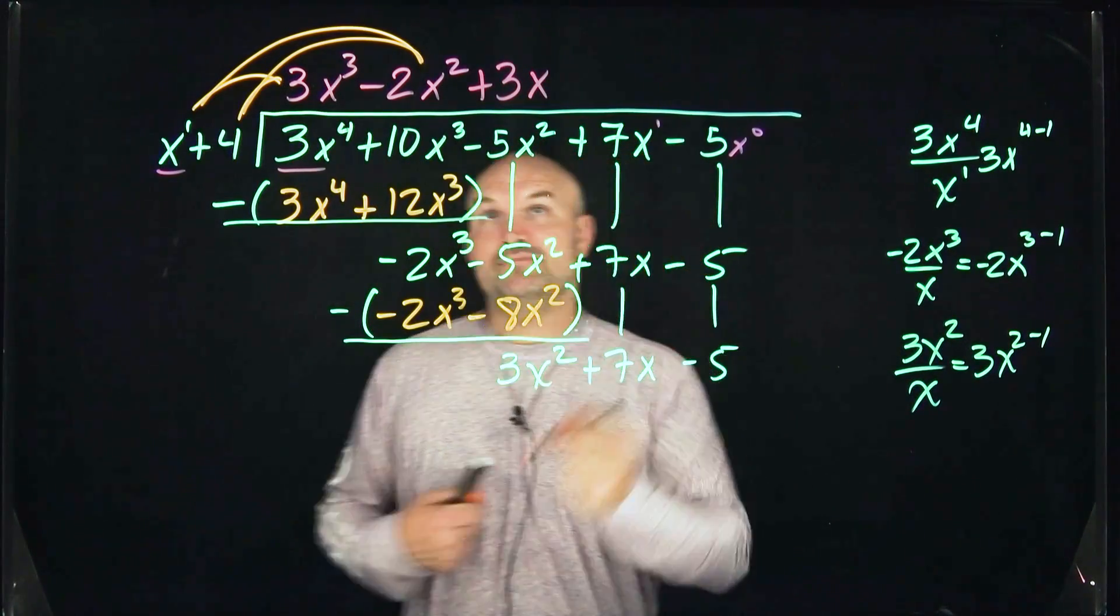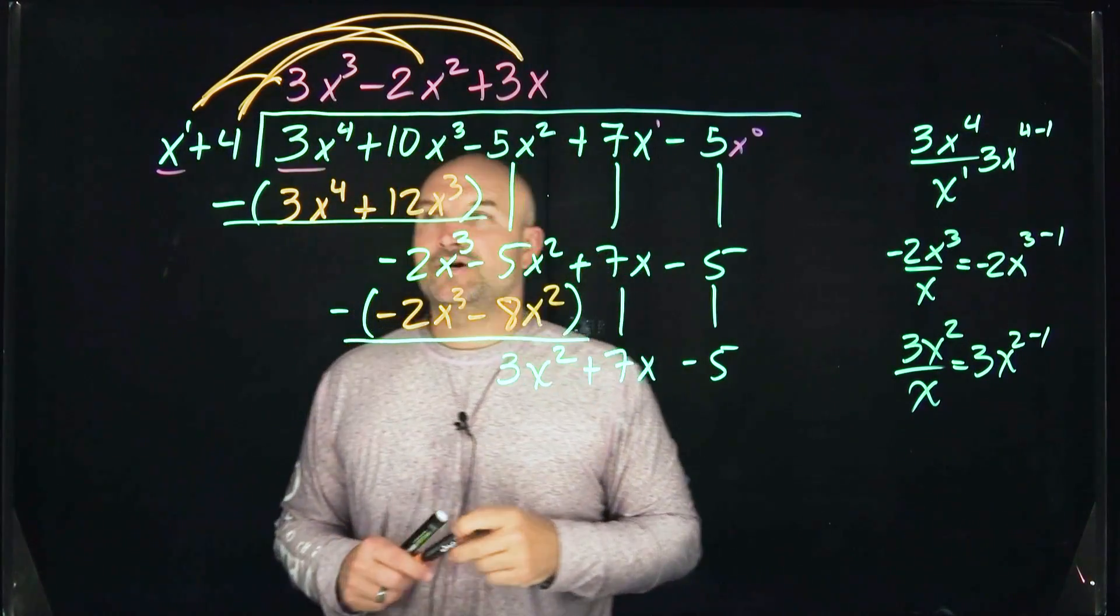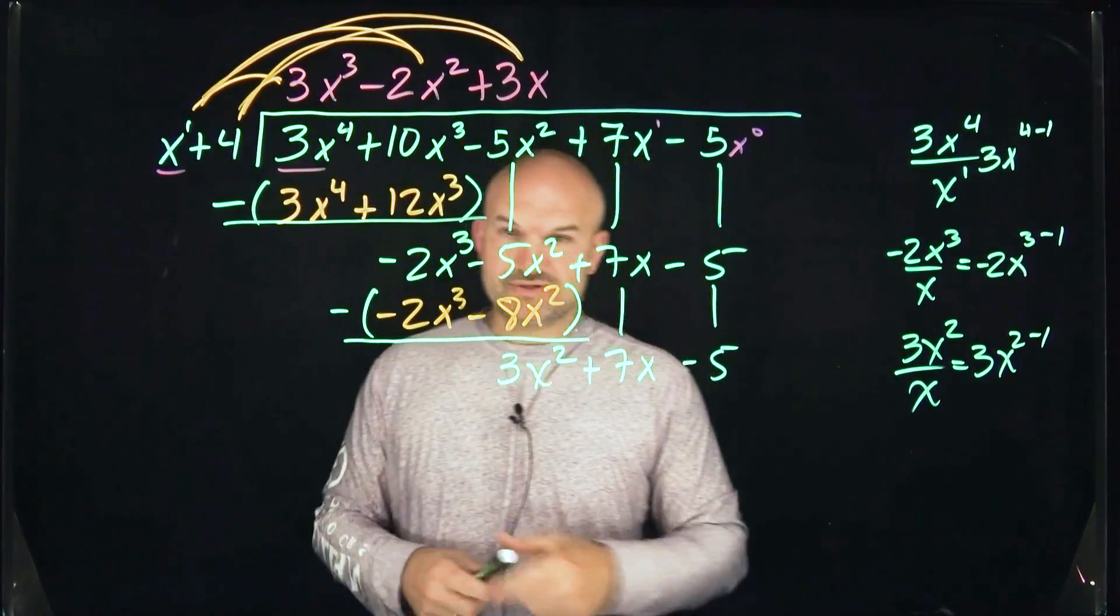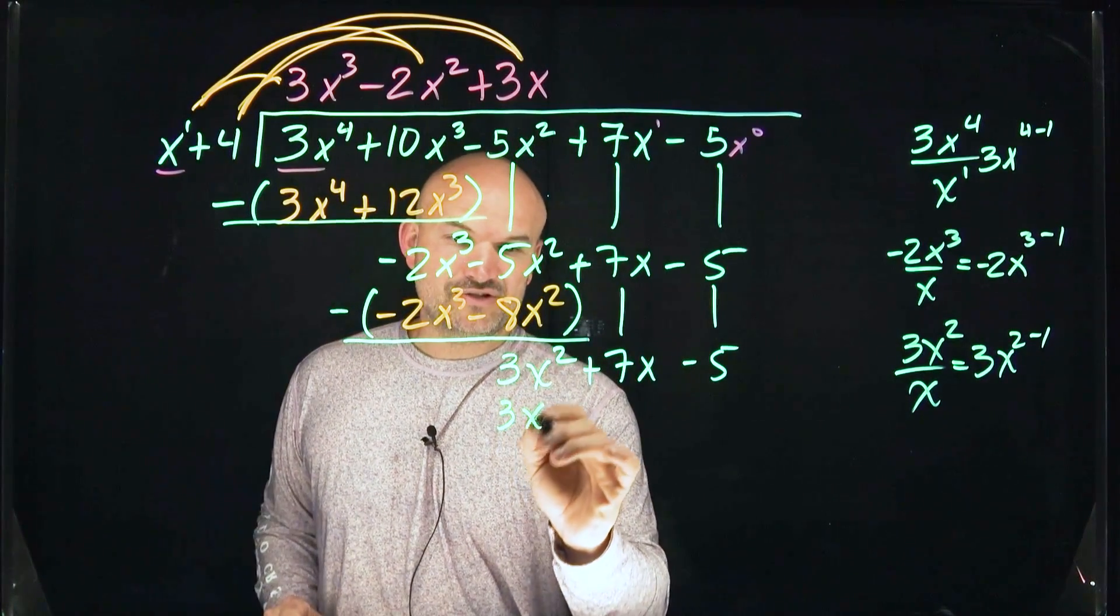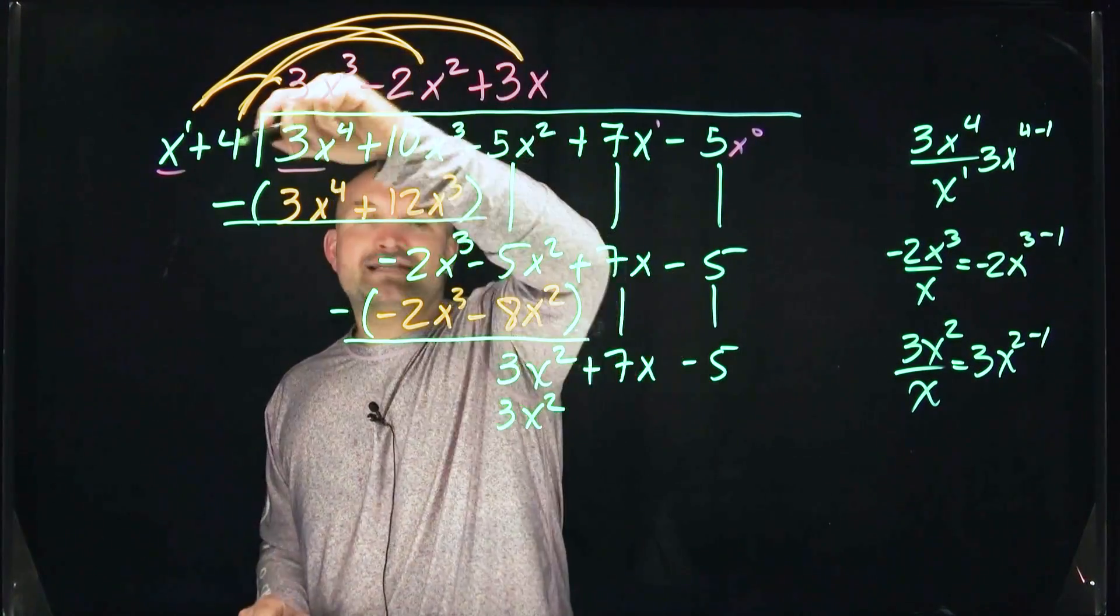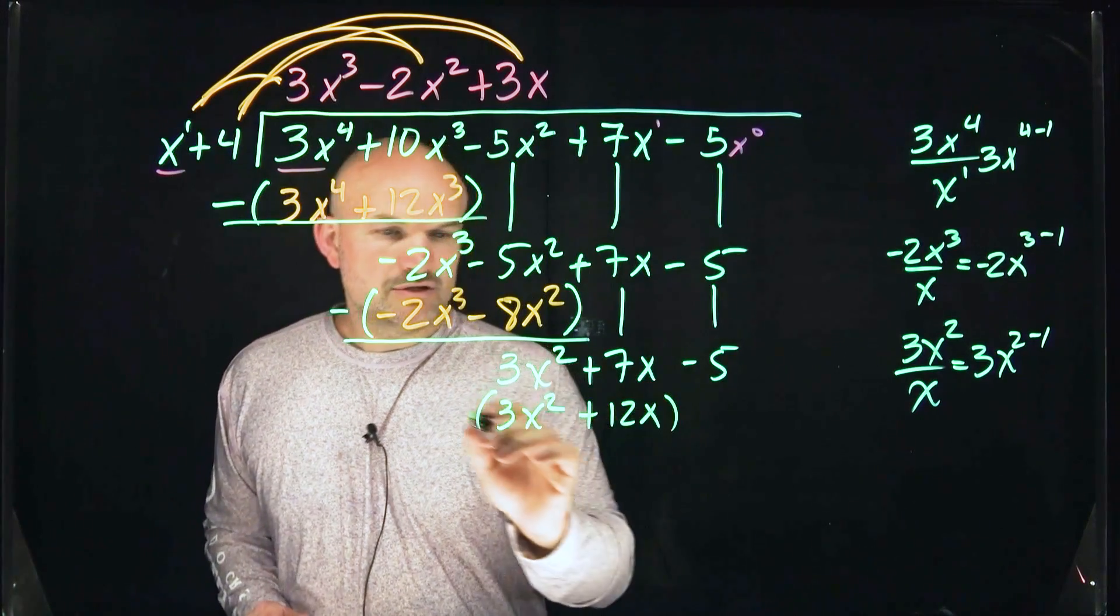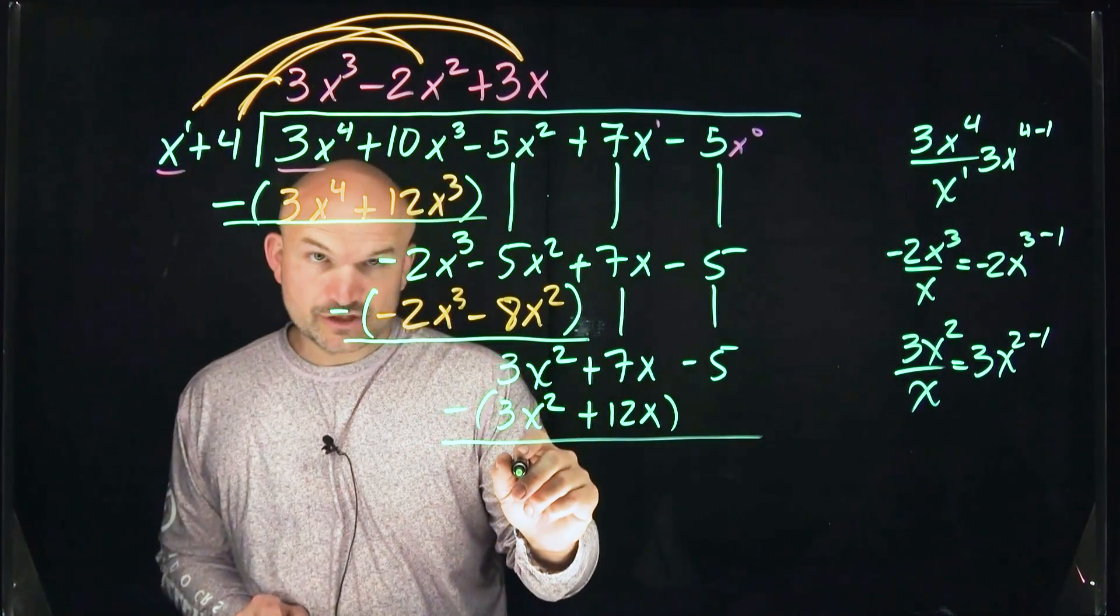Now we take that term and multiply times every term over here. So 3x times x is going to now leave me with 3x squared. Again, those are exactly the same, so I now feel comfortable I'm doing this correctly. 3x times 4 is going to be a positive 12x. Subtract your rows. This is going to go to 0 again.